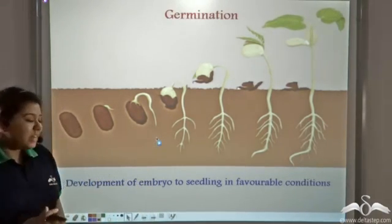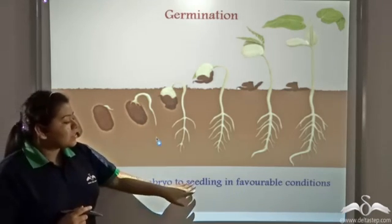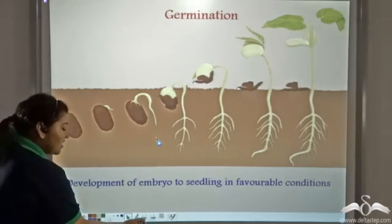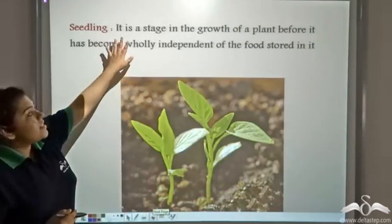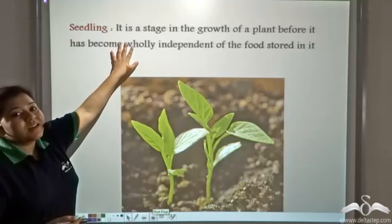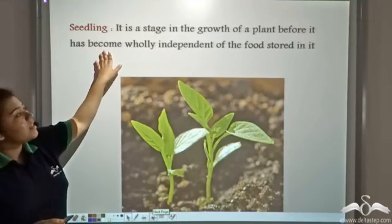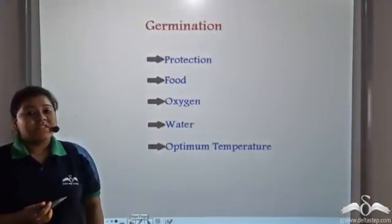Germination is the development of embryo to seedling in favourable conditions. So what is a seedling? Seedling is a stage in the growth of a plant before it has become wholly independent of food stored in it.